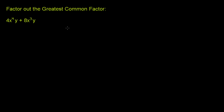Factor out the greatest common factor. The expression given is 4x to the fourth y plus 8x to the third y. When they say to factor out the greatest common factor, they're essentially telling us to find the greatest common factor of 4x to the fourth y and 8x to the third y, and factor it out of this expression — or kind of undistribute it.